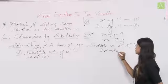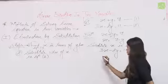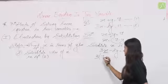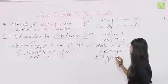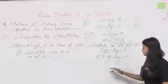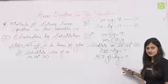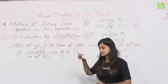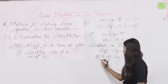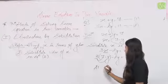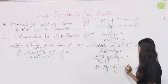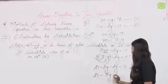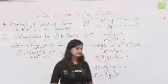Second equation थी: 3x − 2y = 11। यहाँ x की जगह 7 − y put करेंगे: 3(7 − y) − 2y = 11। इसे solve करने पर: 21 − 3y − 2y = 11। तो 21 − 5y = 11। यह equation किसमें convert हो गई — linear equation in one variable। अब x eliminate हो चुका है।